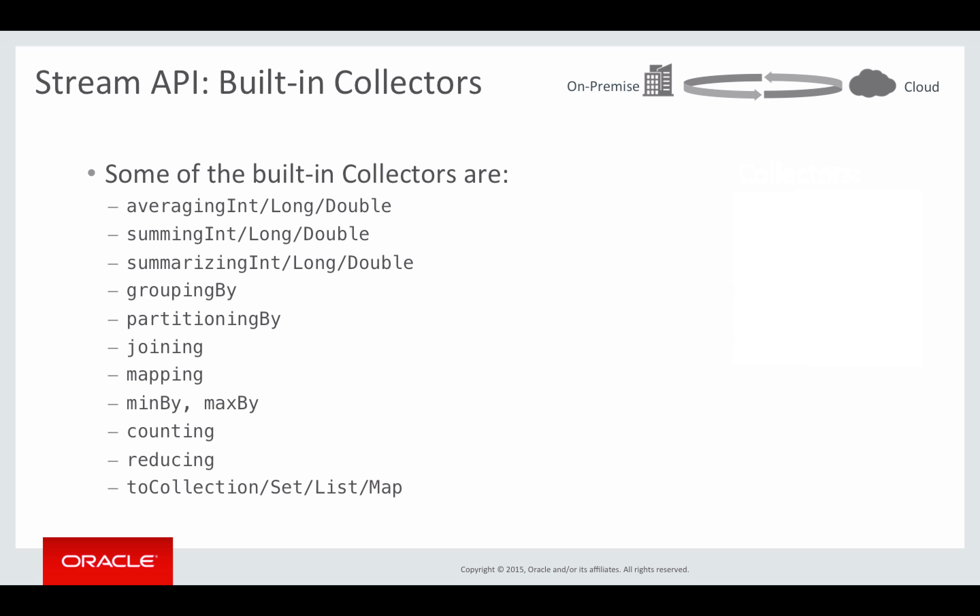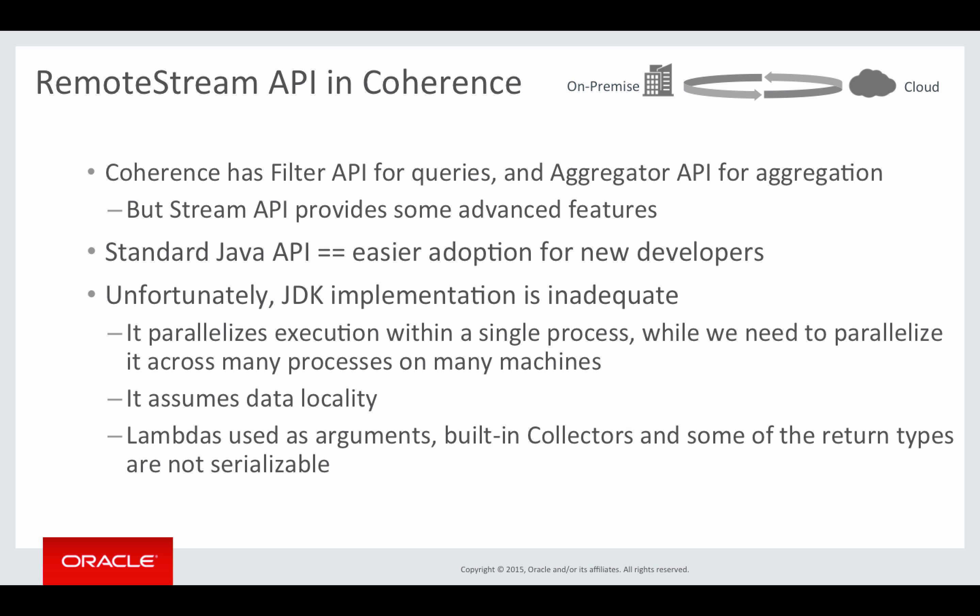Now that we've covered the Stream API in general, let's see how it works in Coherence and why it is even more powerful. Coherence has had both a query API and an aggregation or map-reduce API for many years — they both execute in parallel across the cluster and have been finely tuned to take advantage of indexes. However, the Stream API provides nice features for both queries and aggregation that typically require implementation of custom aggregators. We also wanted to make the learning curve less steep for new Coherence developers by allowing them to use an API they're already familiar with from their Java background.